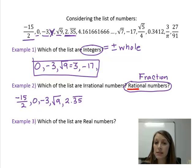4.161661666. Now, this has a pattern that goes with it. But I cannot write this number with an overlined symbol like I saw in my previous example. So even though it has a pattern, it is not a repeating decimal. Hence, it is not a rational number. It is irrational.